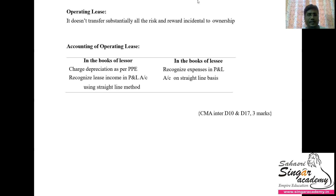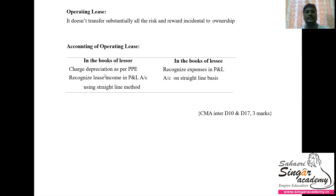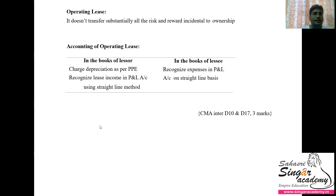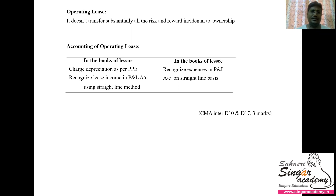Operating lease accounting is simple. In the books of the lessee, the lease rent paid is debited to the P&L account on a straight-line basis. From the lessor's point of view, the lease rent is income credited to the P&L account, and the lessor is eligible to depreciate the asset as per the depreciation prescribed under AS 10 — Property, Plant and Equipment.